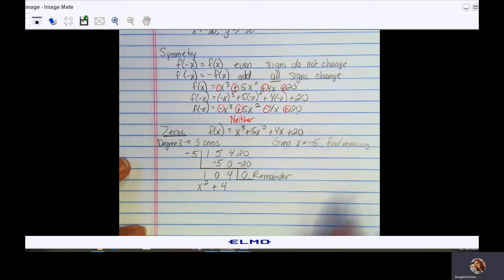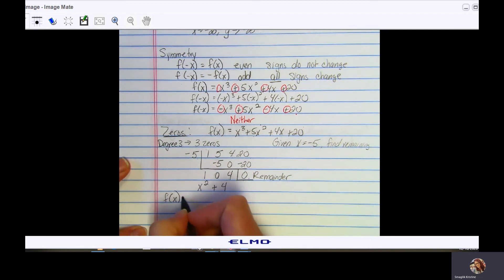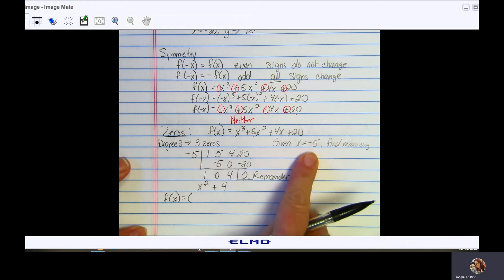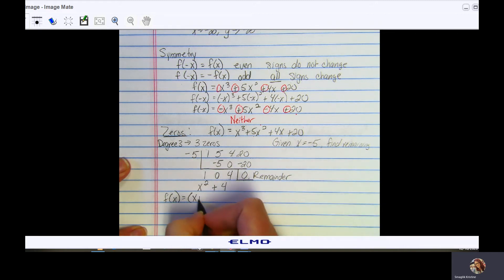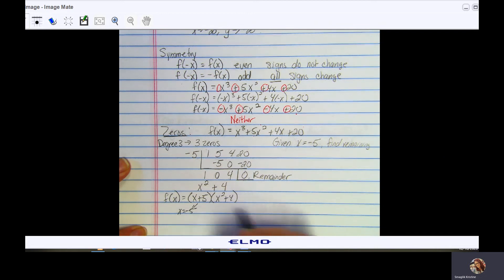Remember what we've done here is we've essentially factored our cubic. We were already told that x equals negative 5 is a zero, so this is x plus 5 times x squared plus 4. We already know here x equals negative 5, so now we need to find the zeros here.